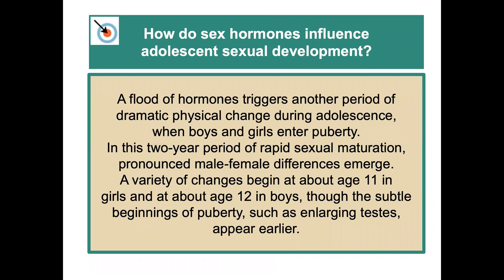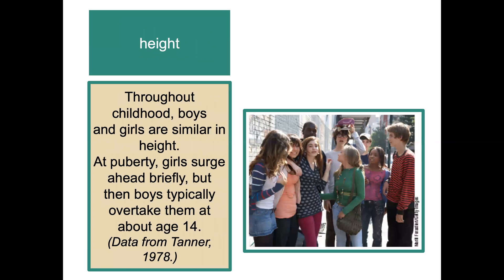A flood of hormones triggers another period of dramatic physical changes during adolescence, when boys and girls enter puberty. This two-year period of rapid sexual maturation sees differences emerge between males and females. Various changes begin at about age 11 in girls and about age 12 in boys on average. Throughout childhood, boys and girls are similar in height, but at puberty girls usually surge ahead briefly, then boys typically overtake them at about age 14.